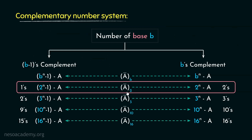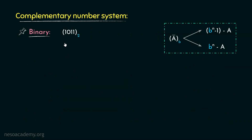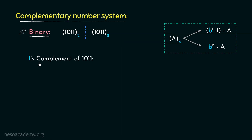Now let's observe the same in terms of the binary number system as well. Consider a binary number 1011. The negative magnitude of 1011 can be stated as 1011 bar. Now in case of binary, since the base is 2, the diminished radix complement is also known as 2 minus 1, that is the 1's complement. The 1's complement of 1011 can be determined by subtracting 1011 from this. Since 1011 is a 4-digit binary number, the base is 2, and this is the decimal magnitude of the largest 4-bit binary number.